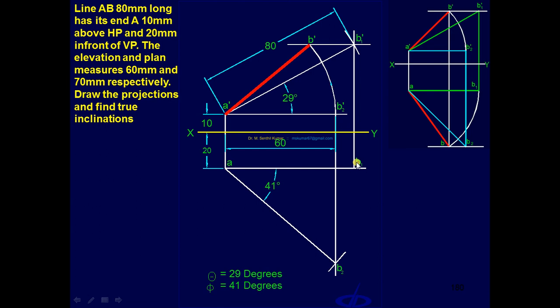A as center, AB1 as radius, draw arc and draw a locus. You will get B. Draw a line joining AB - that is the final top view. As the final check, draw a projector from B' - it must pass through B. This is the answer.